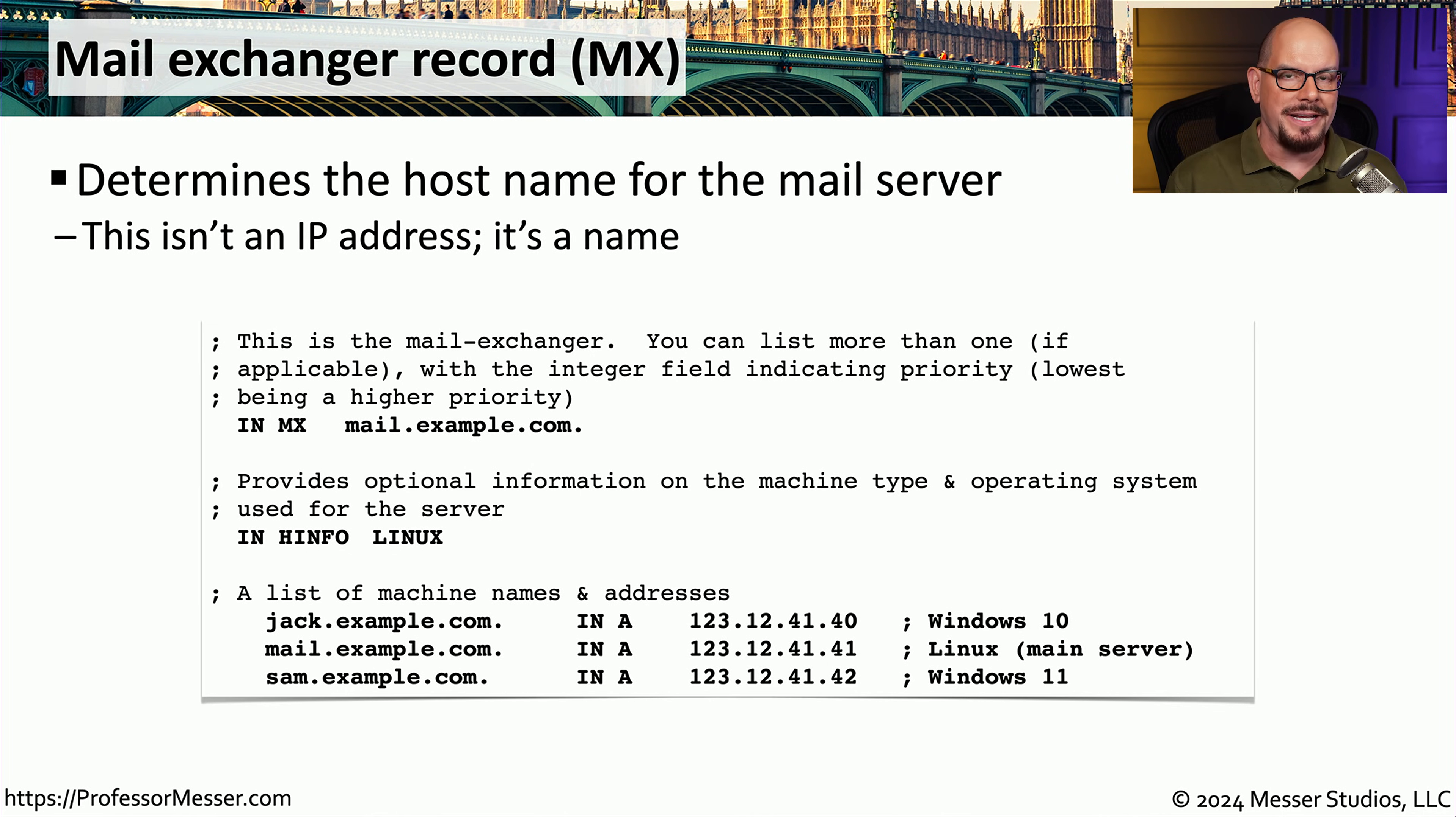Another important record on our DNS servers is the MX record. This stands for mail exchanger record, and obviously this is an important record for organizations that need to make sure that emails are being able to send and receive from that domain name. In this DNS server, you can see there is an MX record, and it specifies that the name of the mail server is mail.example.com. At this point, if you needed to send mail directly to that mail server, you would have to perform another name resolution to mail.example.com. So as long as there is an A record, you'll be able to resolve the IP address associated with that mail server.